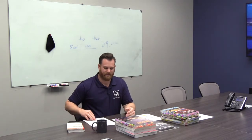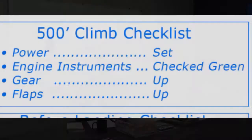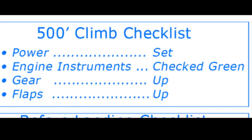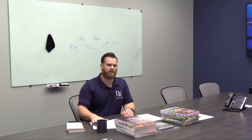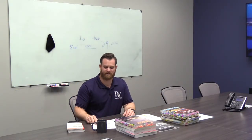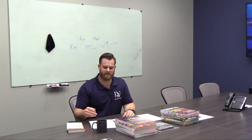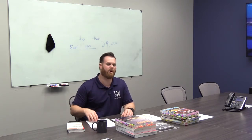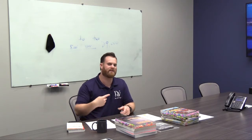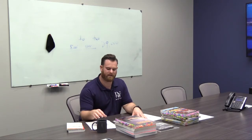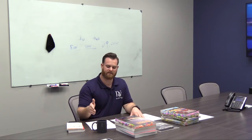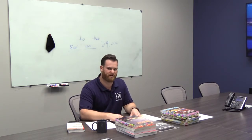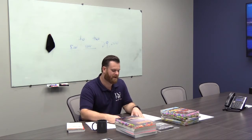For example, doing the climb checklist: 'Climb checklist — power set, engine instruments checked, gear up, flaps up, climb checklist complete.' Or for before takeoff: 'Before takeoff to the line complete, before takeoff below the line complete.' Whatever the checklist is, call out the name, call out what you're doing. If you have to restart, call it again. A good rule of thumb is to also call out your next checklist — so after 'before takeoff check complete,' say 'next checklist is climb checklist.'